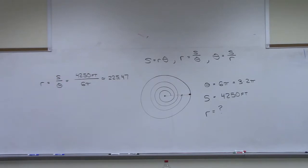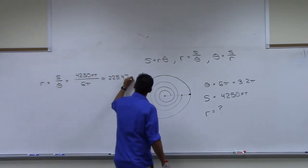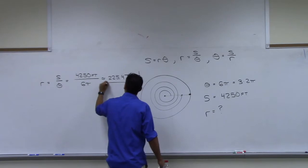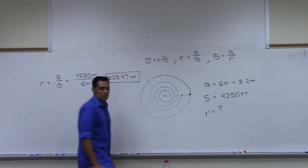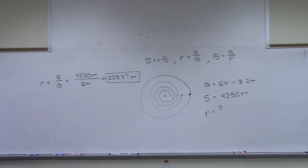225.47ish, whatever, close enough. What though? Feet. Because we had feet here. Feet. That means the radius of this track is about 225 or so feet.